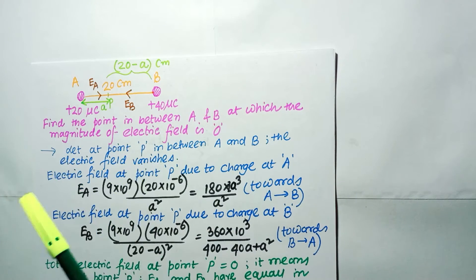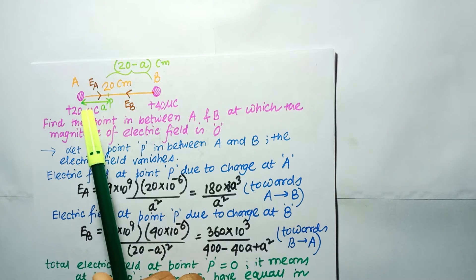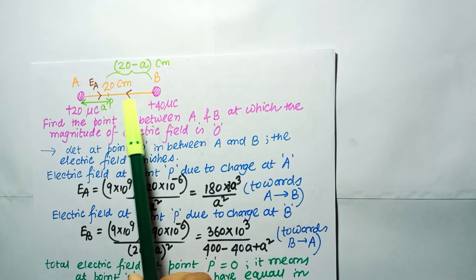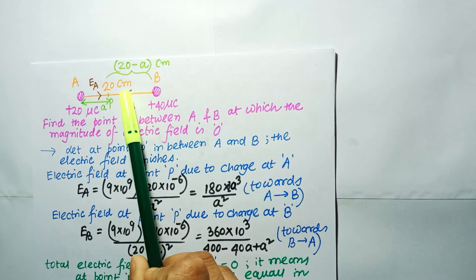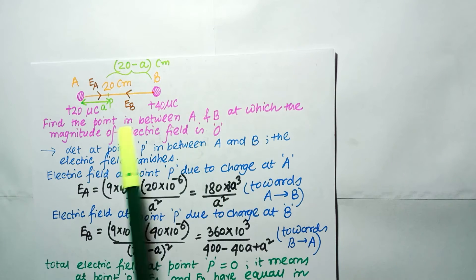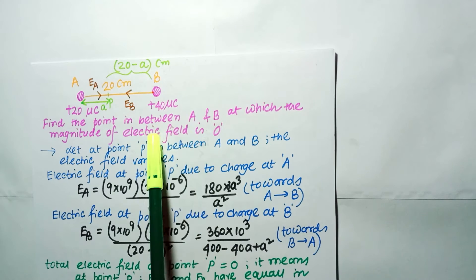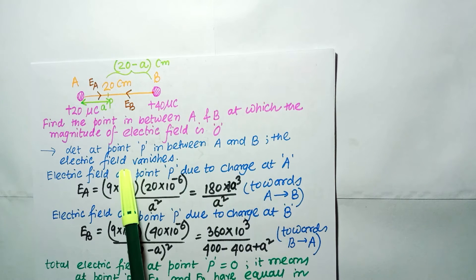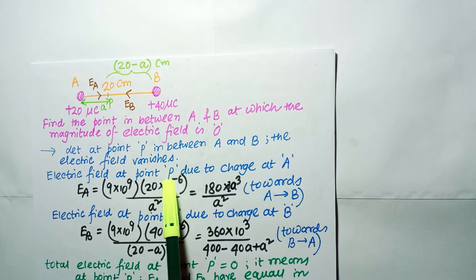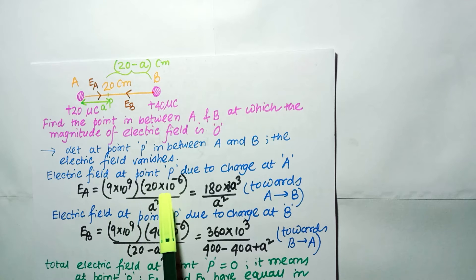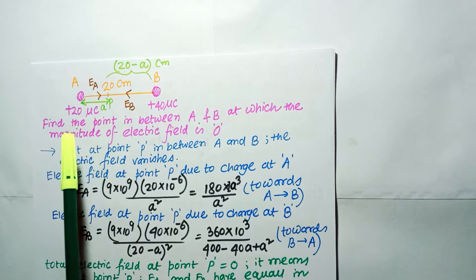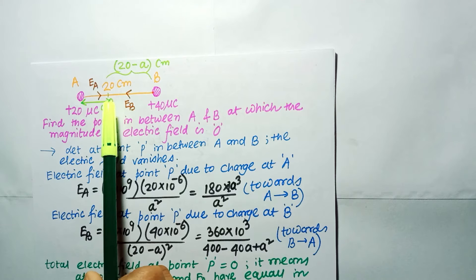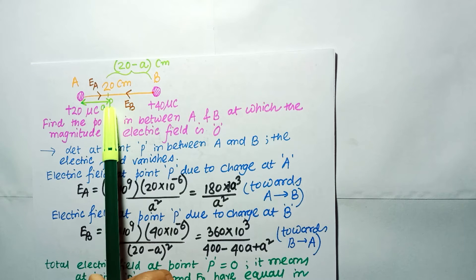Our next problem: two charges of +20 microcoulomb and +40 microcoulomb are situated at points A and B, separated by a distance of 20 cm. Find the point between A and B at which the magnitude of the electric field is zero. We assume that at point P the magnitude of the electric field is zero. Let P be at distance 'a' from A, so the distance from P to B is (20 − a) cm.